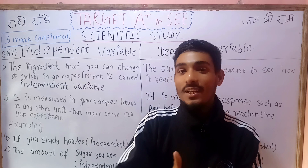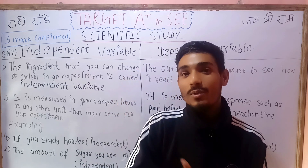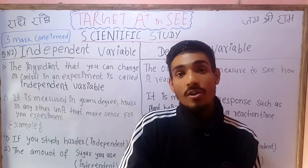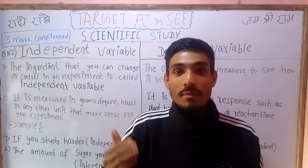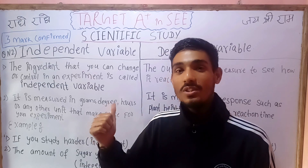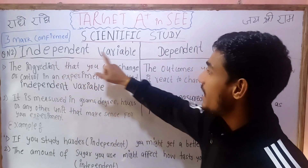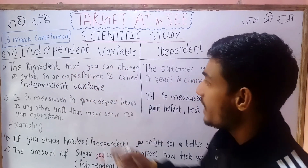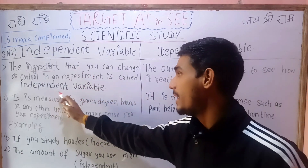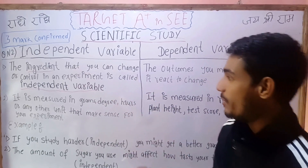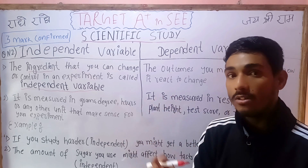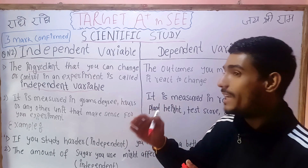If you have a dependent or independent variable — the ingredient that you can change or control in an experiment is called the independent variable. So what is it called? The ingredient that you can change or control is called the independent variable.